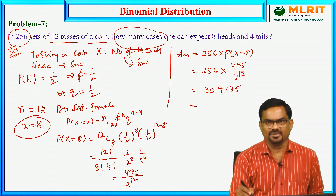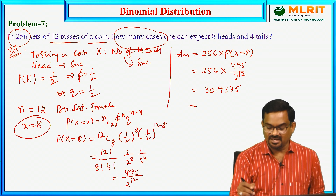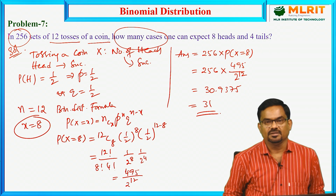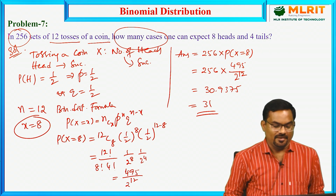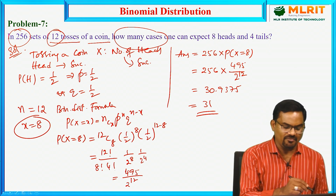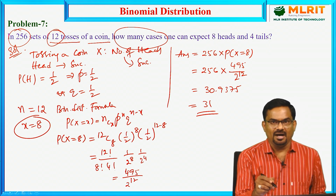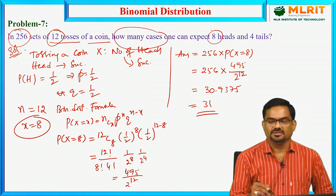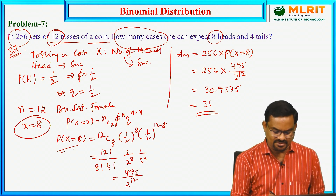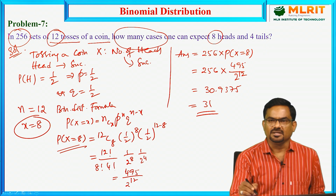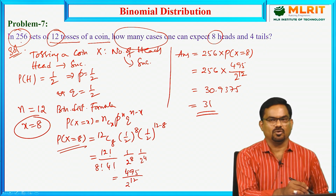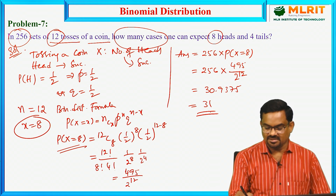But since this is the number of cases, it should be an integer. So we consider the answer as 31. In 256 sets of 12 tosses of a coin, n equals 12 and getting 8 heads means x equals 8. We find the probability of getting 8 successes and multiply by the total frequency of 256, which results in approximately 31.